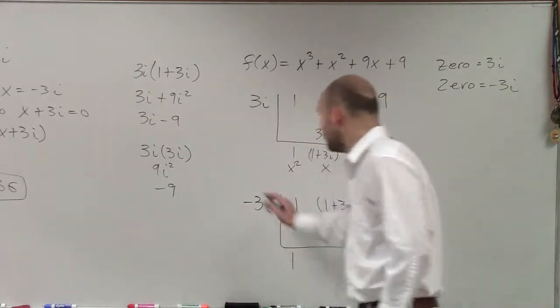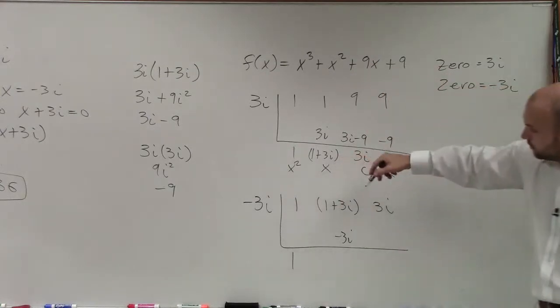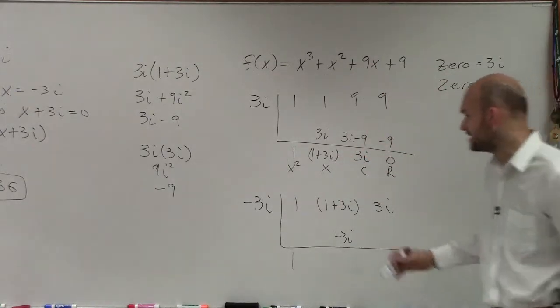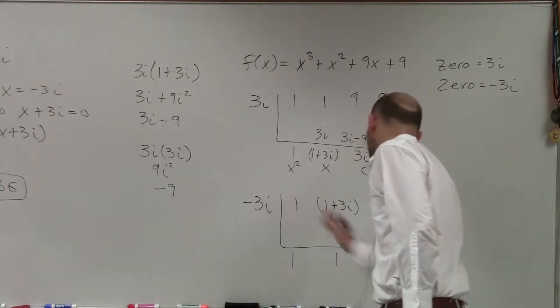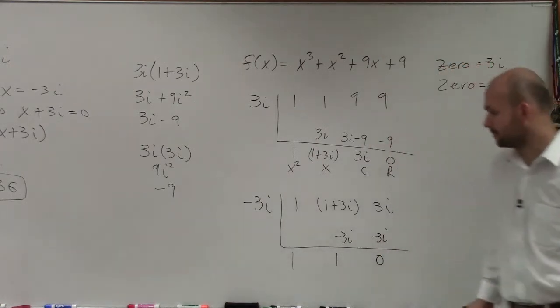So now I do synthetic division with my quotient of my previous problem. Again, I bring down the one. One times negative 3i is negative 3i. One plus 3i minus 3i is just going to be one. One times negative 3i is negative 3i, which is zero.